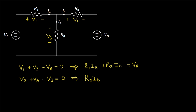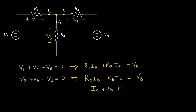Taking VB to the other side and noting that V3 is R3 times Ic, we have two equations but three unknowns — Ia, Ib, and Ic — so we cannot solve yet. Applying Kirchhoff's current law at the shared node gives a third equation: Ia entering minus Ib leaving minus Ic leaving equals zero. Now with three equations and three unknowns, we can solve for all three currents.